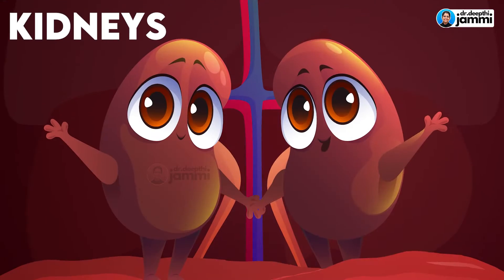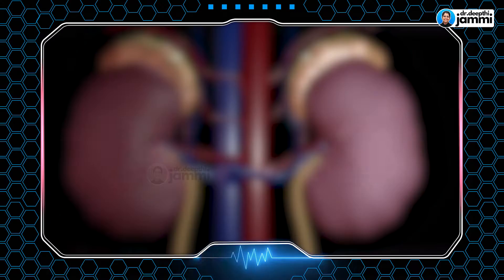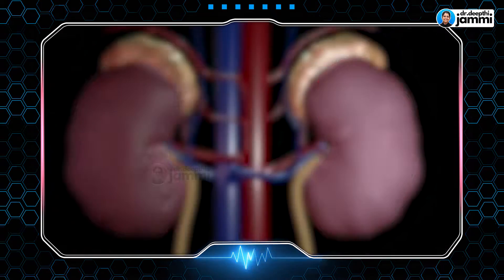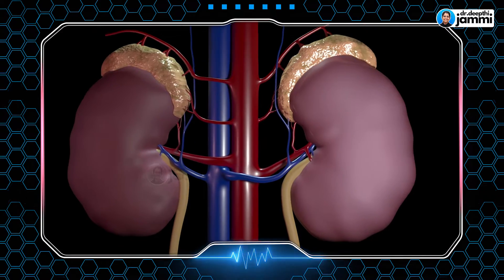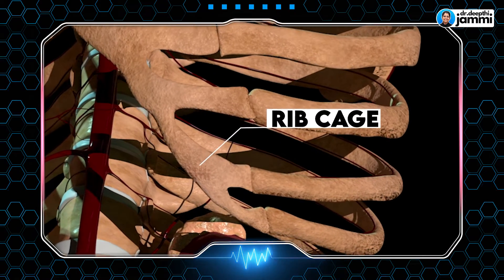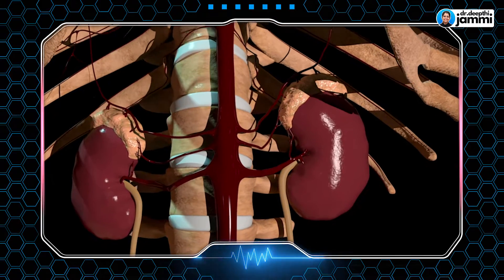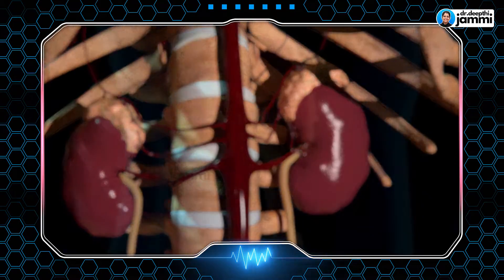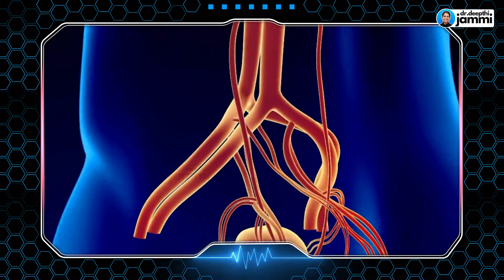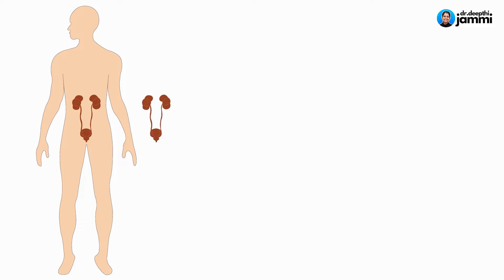We have two kidneys. They are bean-shaped organs located just below the ribs. The kidney is a very important part of the urinary system. What does it do in our body?